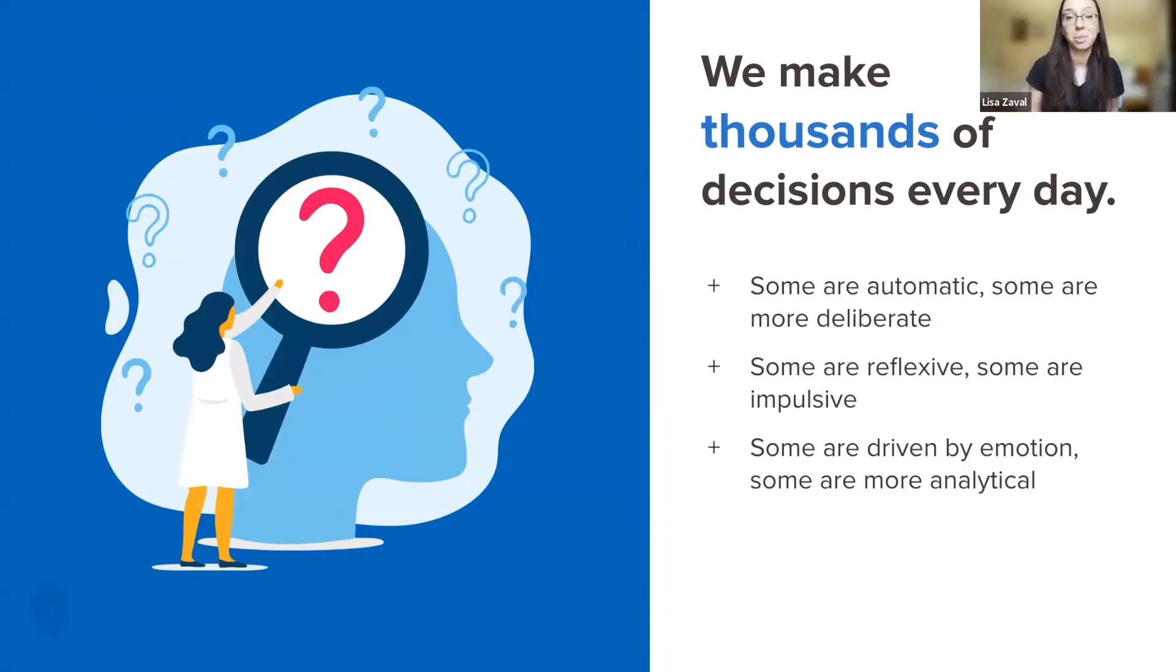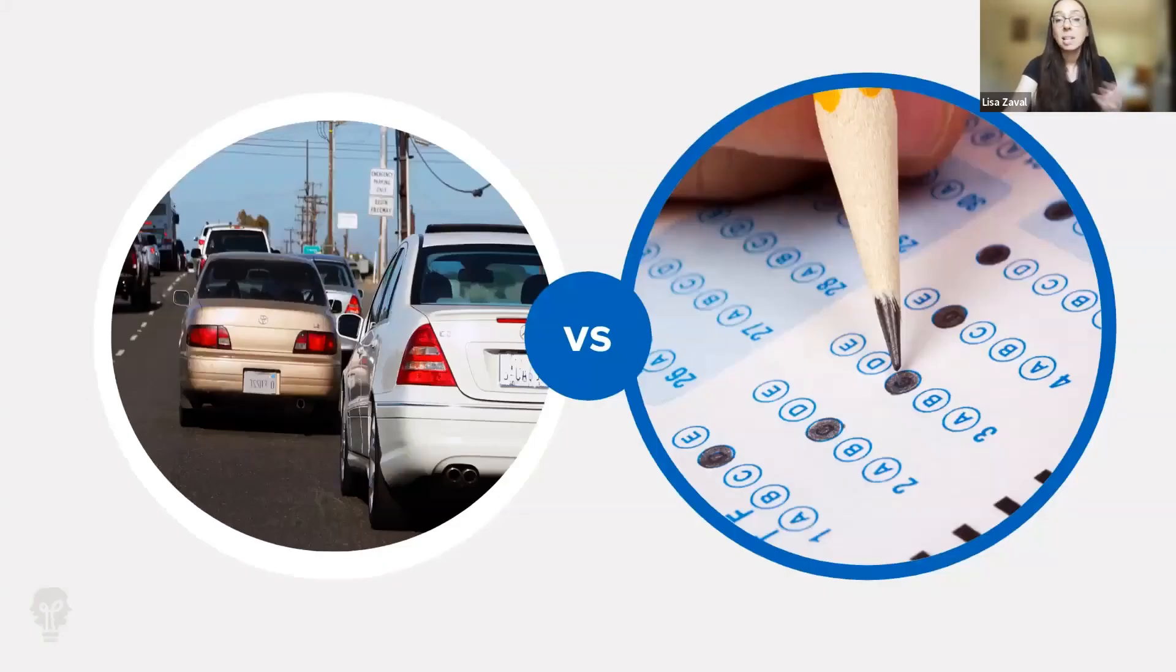How do we process cognitive information in general? We all know we make thousands of decisions every day. Some are more conscious, some are unconscious, some are very analytical. Some decisions and choices are driven by our gut, our emotion.